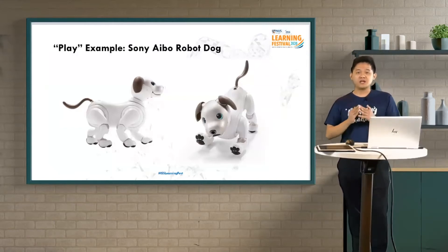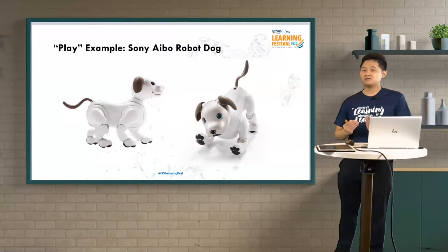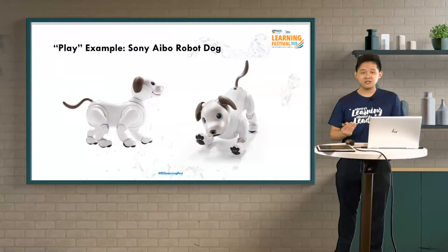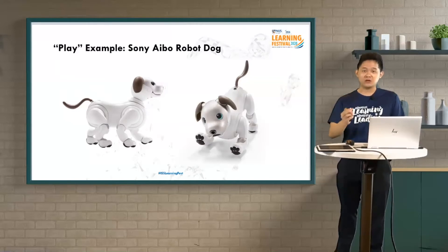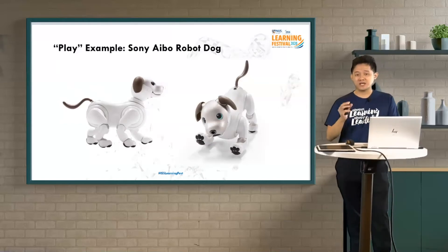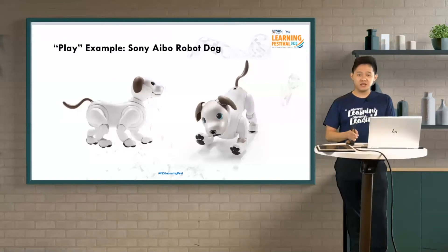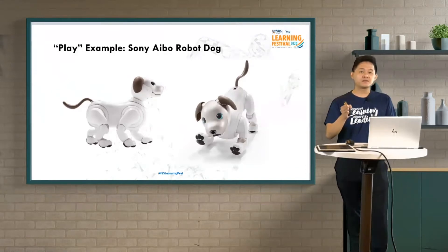Next we have the Aibo robot dog by Sony. Looking at the screen — it looks like a real dog. If you get the chance to look at the Sony advertisement, you can see this particular robot dog moves exactly like a real dog. Of course, it's always debatable whether it feels like a real dog — that's up to personal choice. Some people prefer a robot dog for certain reasons. But bear in mind: currently we have robot dogs that are able to closely replicate the movements of the real dog.